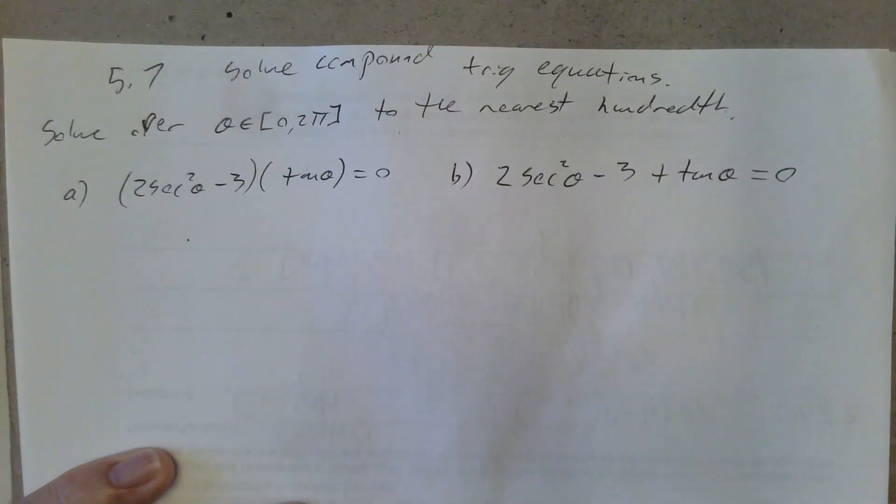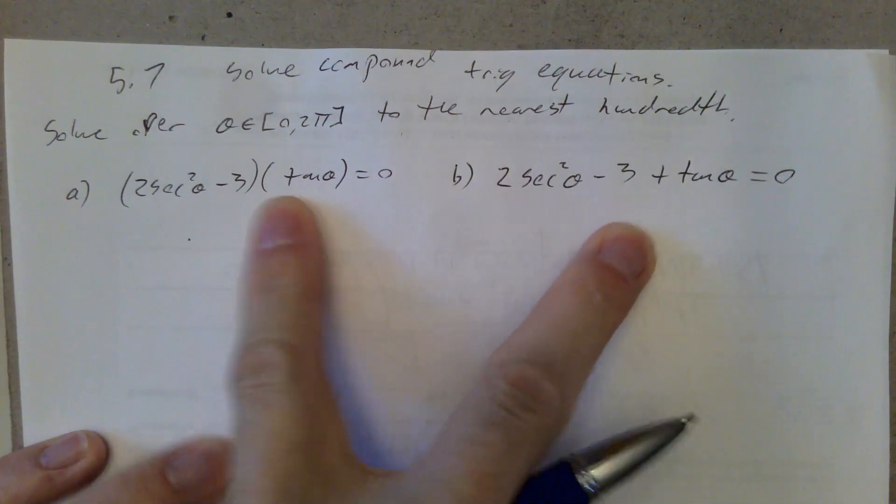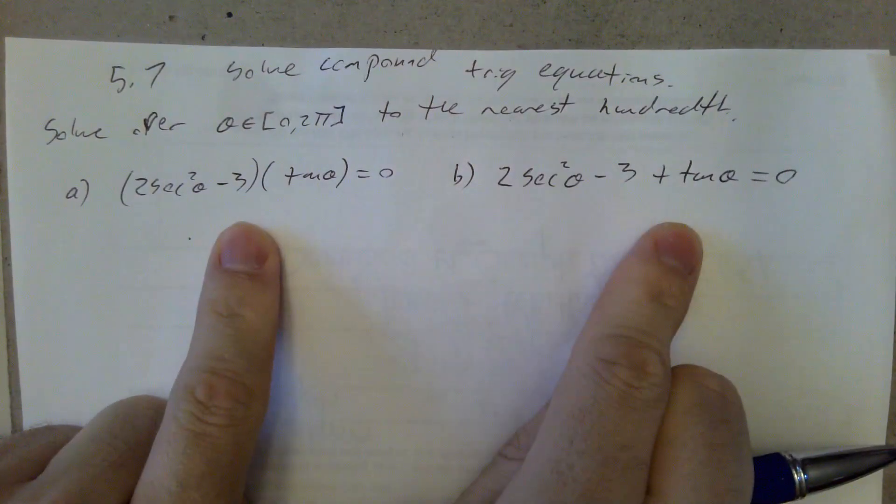Hello, Riles. For lesson 5.7, when we're solving compound trig equations, I want to take a look at two similar equations here, with just one little difference in their symbols that causes a huge difference in our approach.